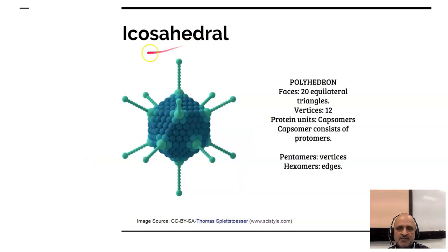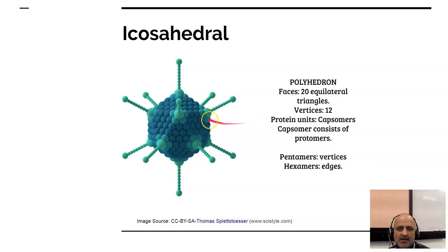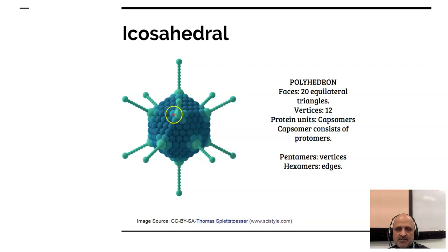The second configuration is the icosahedral configuration. This consists of a polyhedron with 20 equilateral triangular faces and vertices. The protein units are known as capsomeres and capsomeres consist of protomers. Pentomers are located at the vertices and hexomers are located at the edges of the icosahedral.